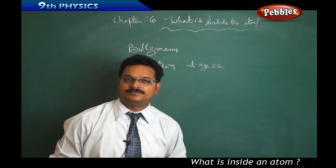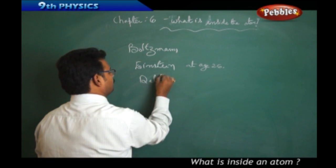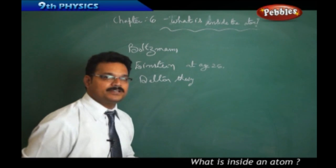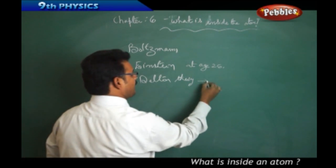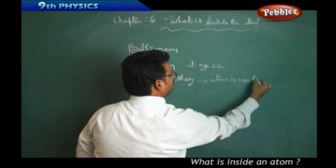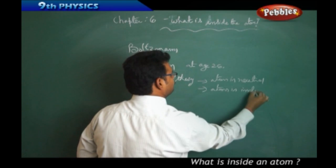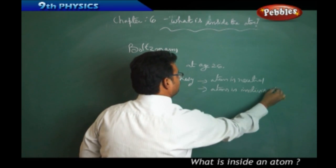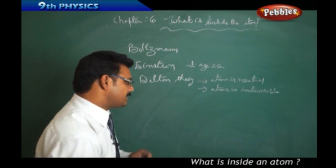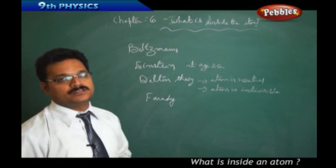Looking at another dimension of history, there was a scientist called Dalton. In his theory — Dalton's theory — he proposed that the atom is neutral and the atom is indivisible. But later, another scientist called Michael Faraday, another great physicist, challenged this view.